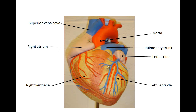First, let's take a look at the human heart. Structurally, it is a muscular hollow organ made up of the two receiving chambers, the right atrium and the left atrium, and two pumping chambers, the right and left ventricles.